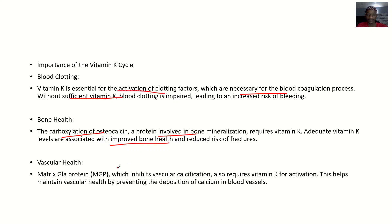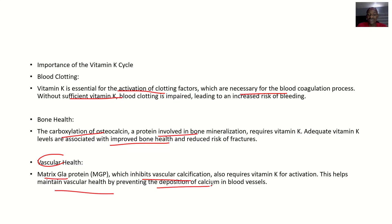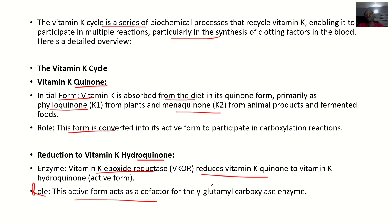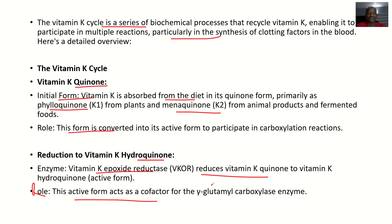For vascular health, Matrix Gla Protein (MGP), which inhibits vascular calcification, also requires Vitamin K for activation. Calcification is the deposition of calcium in blood vessels. The protein that prevents calcium from being deposited in blood vessels needs Vitamin K to function, helping to maintain healthy, flexible blood vessels.